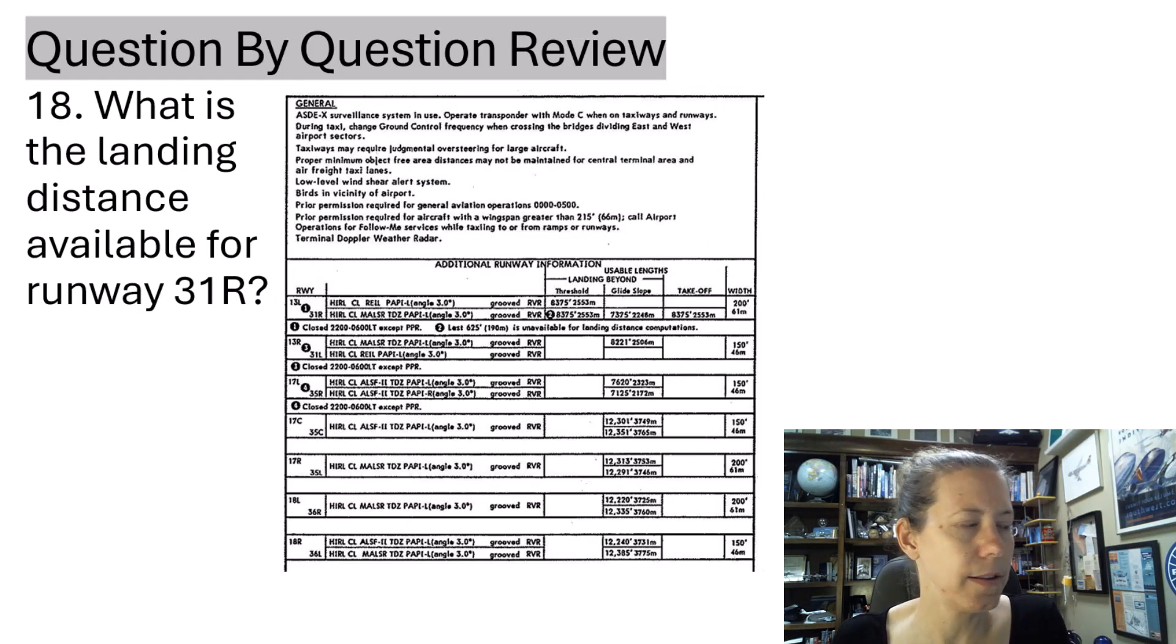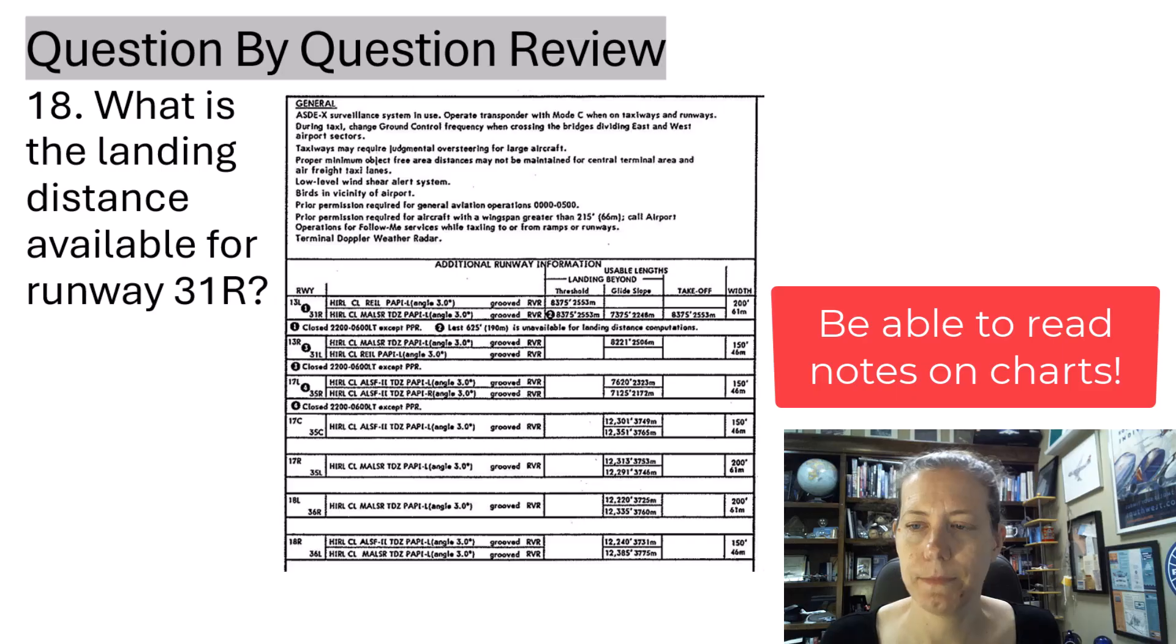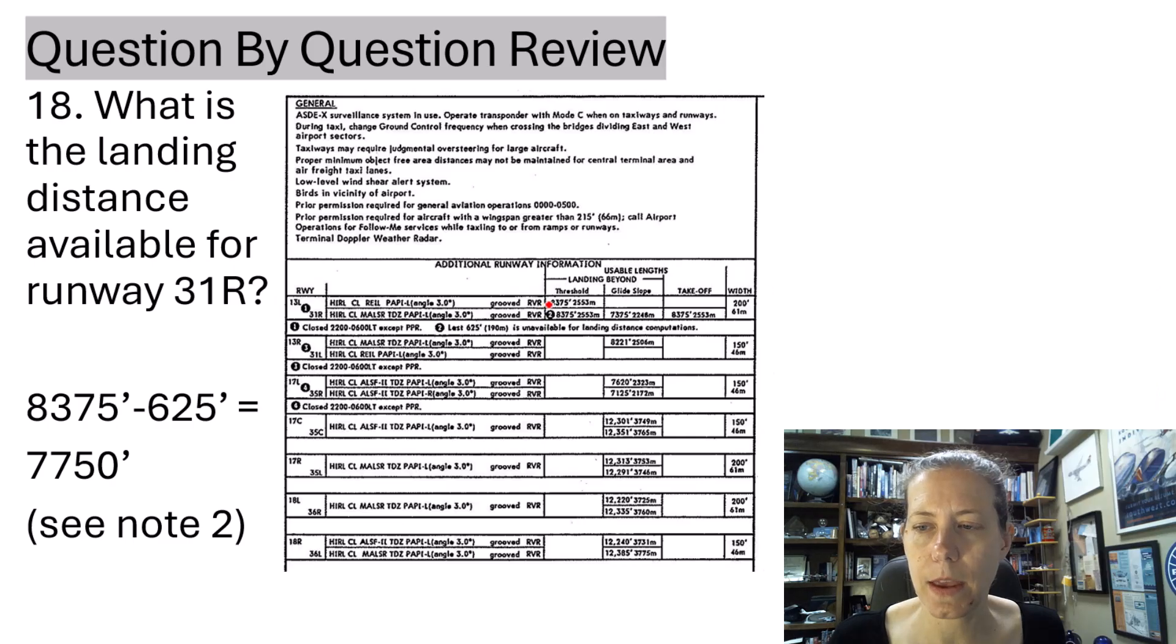Then they asked, what is the landing distance available for landing on runway 31 right? So I think I'm going to actually draw on this slide a little bit, because one thing they said they really like is to be sure people know how to read the little notes. Jeppesen calls them ball notes on their slides, on the charts. So here we have a slightly confusing thing. So 31 right, right here, we do have a note landing distance beyond the threshold. 8,375 feet, but there is a little note 2. So then you have to look at the 2 note, which says that the last 625 feet is not available for landing distance computation. So 8,375 minus 625 would give me 7,750 if I'm applying that note number 2 on the chart.